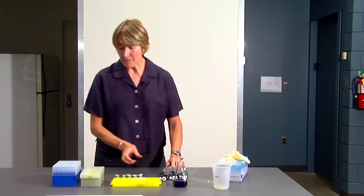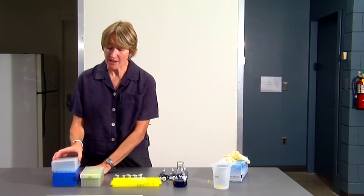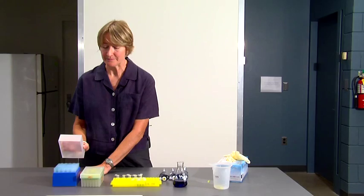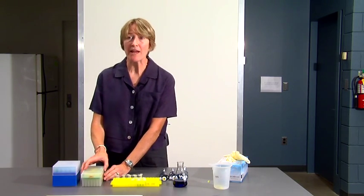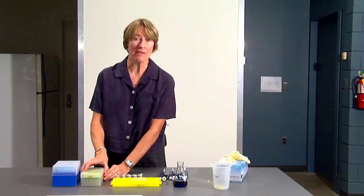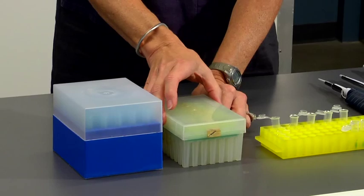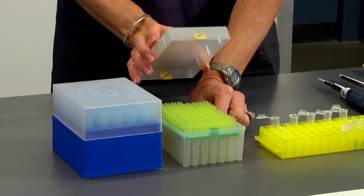This color coding tells you which size and which color pipet tips to use. If your micropipet has a blue dot, you use the larger blue tips. If your micropipet has a yellow dot on the top, you use the smaller yellow tips.